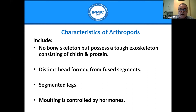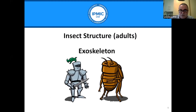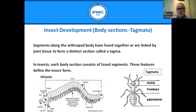Characteristics of arthropods include: no bony skeleton but a tough exoskeleton consisting of chitin and protein, a distinct head formed from fused body segments, and segmented legs. Molting is controlled by hormones. The tough external exoskeleton enables survival in a wide variety of circumstances — it reduces water loss, reduces risk of predation, and is a very good survival adaptation.